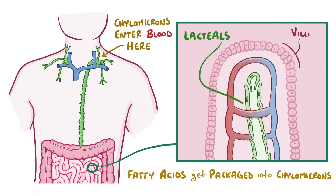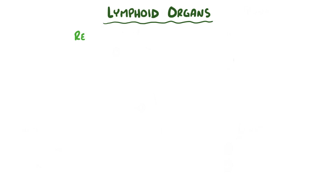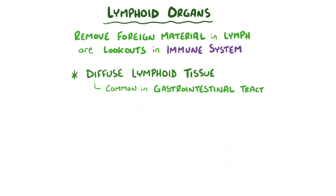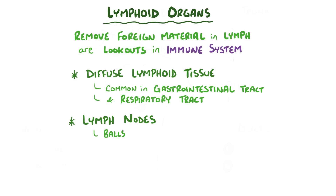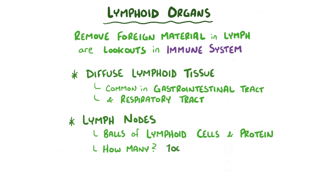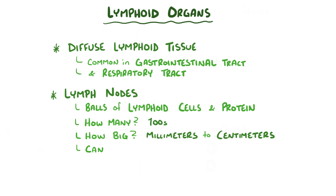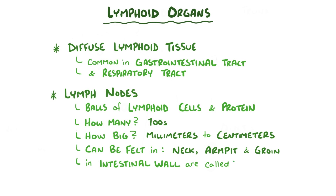The lymphatic system also plays a role in immune function. Lymphoid organs remove foreign material from the lymph to keep it from entering the bloodstream and act as lookout points for the body's immune defenses. Some lymphoid organs are in the form of diffuse lymphoid tissue — a loose arrangement of lymphoid cells and protein, typically in the lining of the gastrointestinal and respiratory tract. Another type of lymphoid organ is the lymph node, which is a tightly packed ball of lymphoid cells and protein. Hundreds of lymph nodes cluster along the lymph vessels, each a few millimeters to about one to two centimeters in size. They can be felt especially in the neck, armpit, and groin, and can also be found in the intestinal wall, where they're called Peyer's patches.